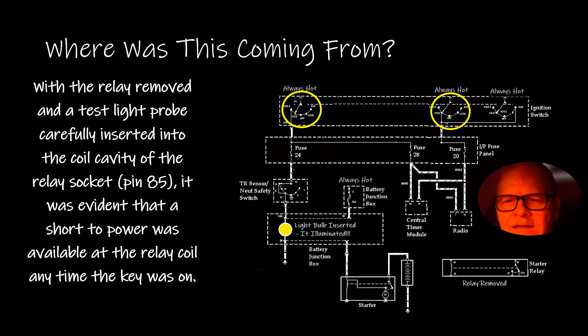With the relay removed and a test light probe carefully inserted into the coil cavities of the relay socket, it was evident that a short to power was available at the relay coil anytime the key was on. This problem was there most of the time, so that gave me the opportunity to find out what was wrong by tracking it down. If it's coming and going it's a lot more difficult, but if it's there all the time you can typically find it.